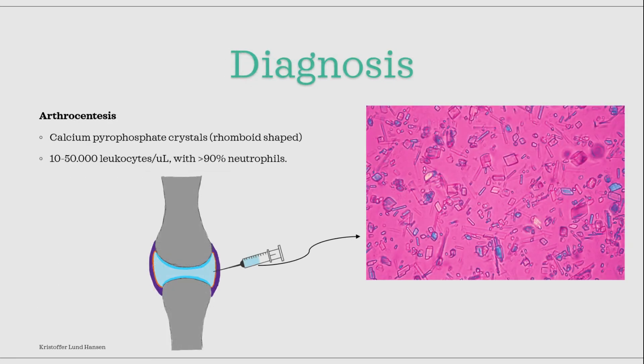Now to diagnosis. Arthrocentesis should be performed, especially in acute cases. When examining the synovial fluid, we can see rhomboid-shaped calcium pyrophosphate crystals. They are quite distinct from the needle-shaped crystals that can be seen in normal gout. For microbiology, there will be 10,000 to 50,000 leukocytes per microliter, with over 90% of them being neutrophils.